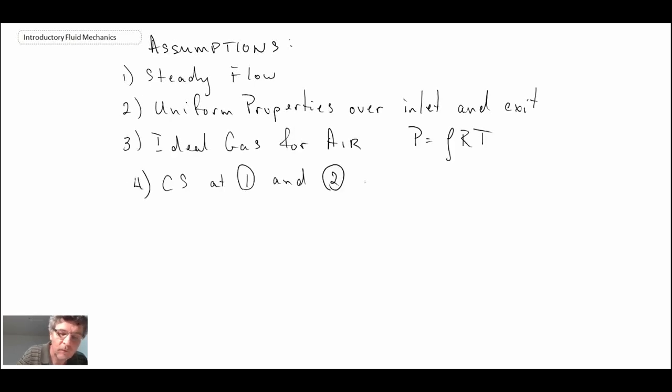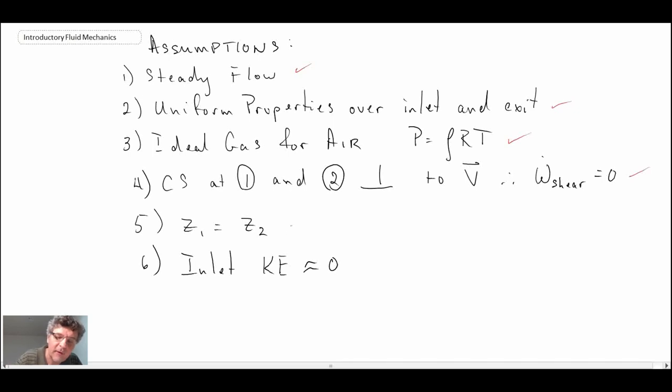Those are the assumptions we'll be making in this problem: steady flow, so it's not changing with time. Uniform properties over the inlet and exits, that would be temperature as well as velocity. We'll apply and use the ideal gas equation. The control surface at one and two is perpendicular to the velocity vector and therefore the shear component disappears. There is no change in potential energy and the inlet kinetic energy is small. I think I had V1 was approximately zero. That doesn't mean the mass flow rate is zero, but what that does mean is that the kinetic energy can be neglected on the inlet.